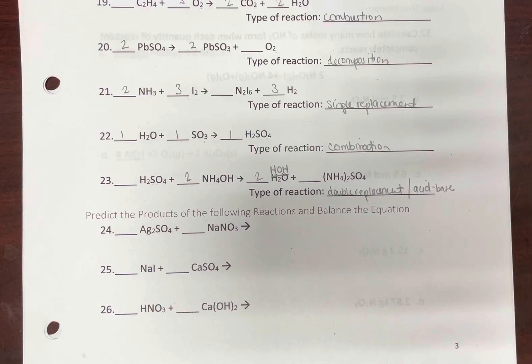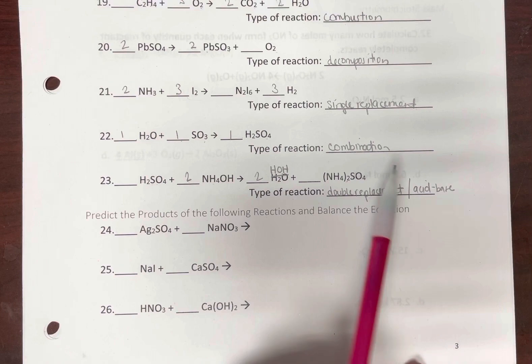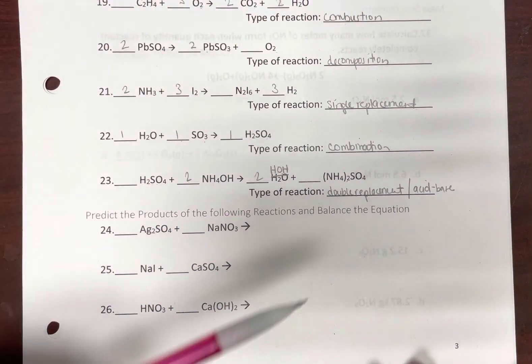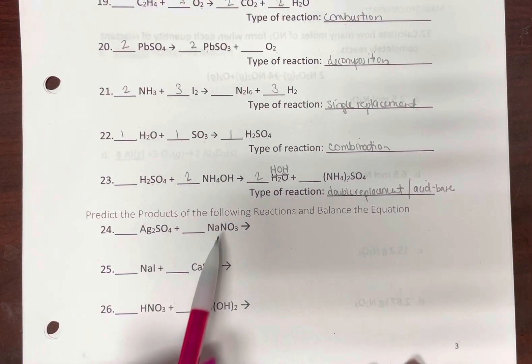Alright, for this next section, this is about predicting products of these reactions and then balancing the equations. Looking at this, we have two ionic compounds, so it's going to kind of go back to what types of reactions we have. Two ionic compounds, so this is probably going to be a double replacement reaction.